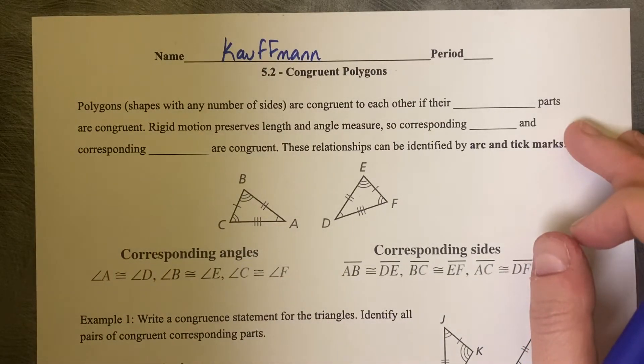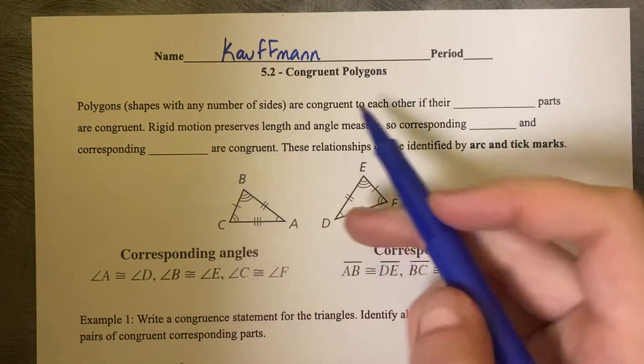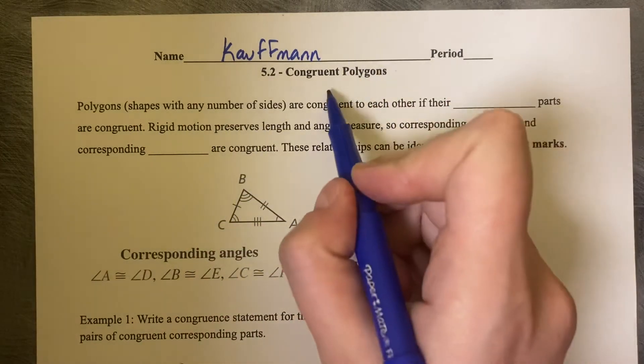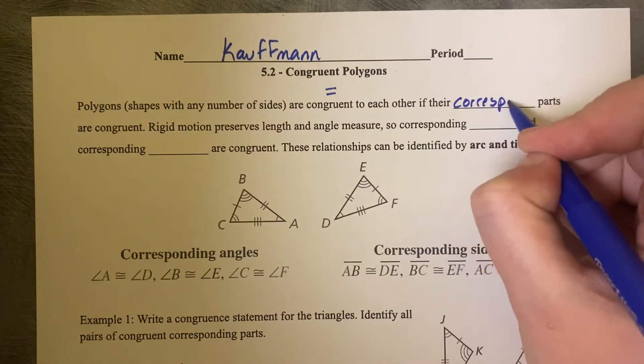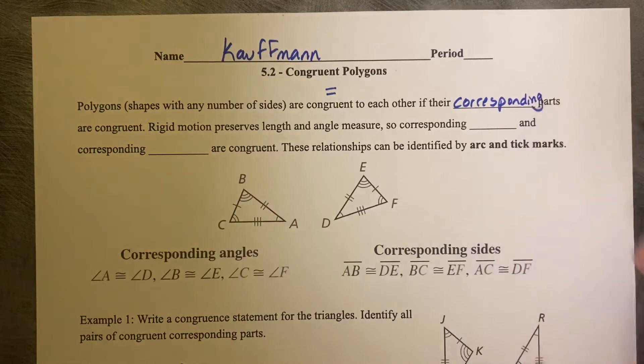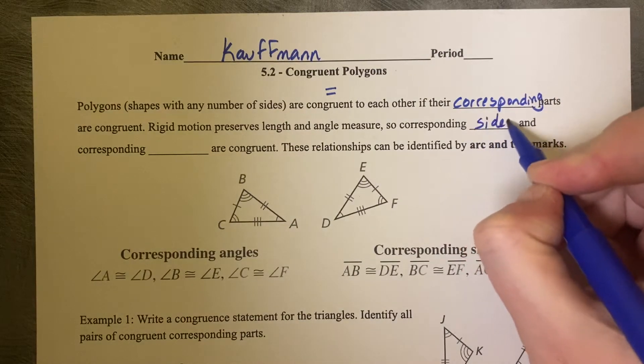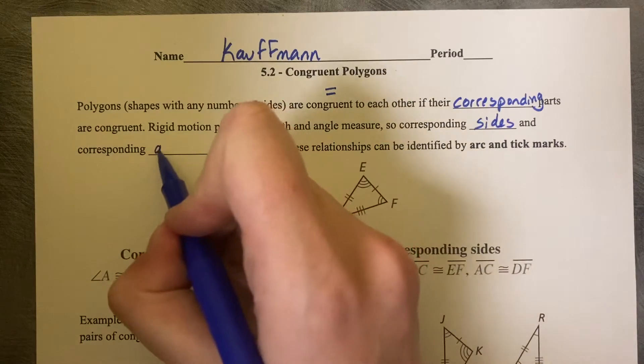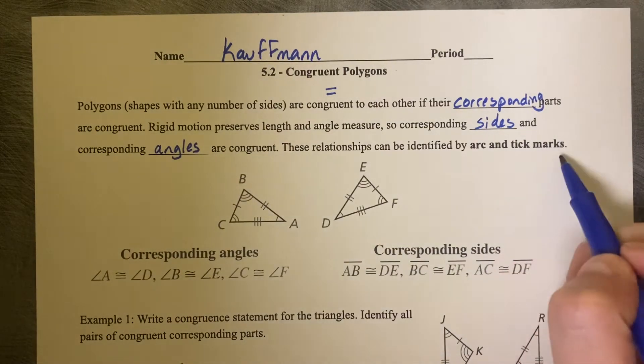5.2 Congruent Polygons. Polygons, shapes with any number of sides, are congruent to each other or equal to each other if their corresponding parts are congruent. Rigid motion preserves length and angle measure, so corresponding sides and corresponding angles are congruent. These relationships can be identified by arc and tick marks.